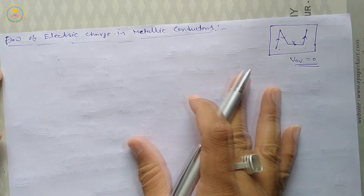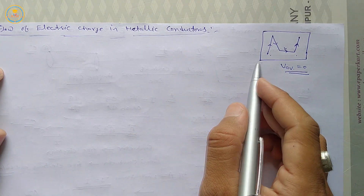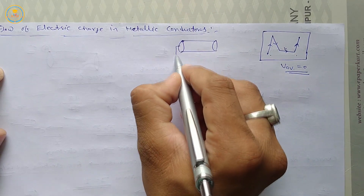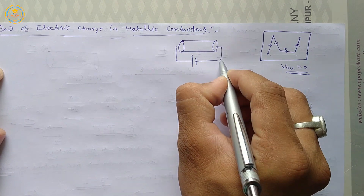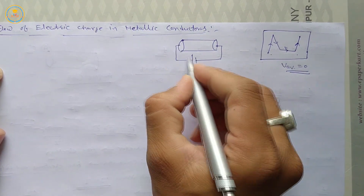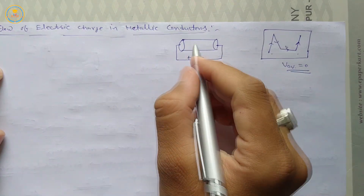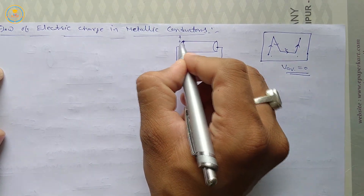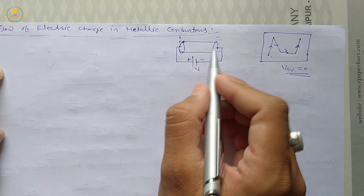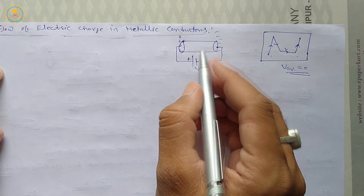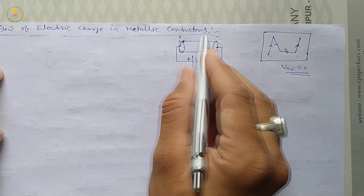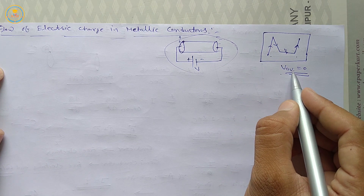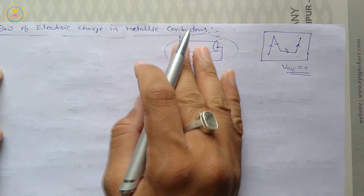But when a potential difference is applied on this conductor, an electric field is produced. Suppose one end is positive and the other is negative — then an electric field is produced. Due to this, an electric current flows in the conductor because we find some values of average velocity.